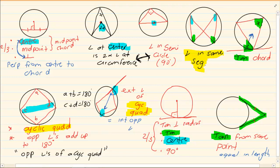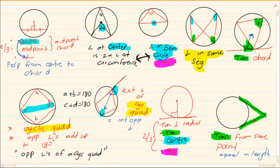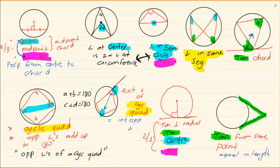Looking at all our theorems: three are linked with cyclic quads, highlighted in yellow. Then we have the center-related ones — midpoint chord, angle at center is two times angle at circumference, and radius perpendicular to tangent. The 90-degree ones are highlighted purple. You must know these nine theorems very well. Don't remember them as theorem one, two, three — those numbers are not going to give you any marks.